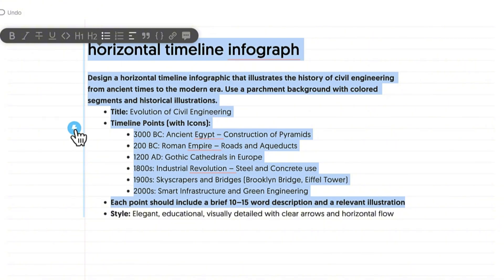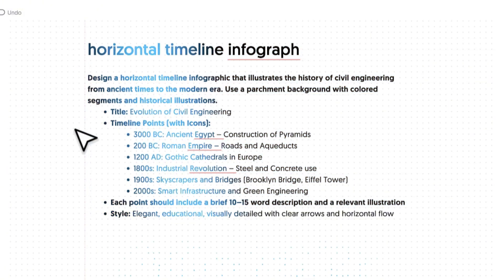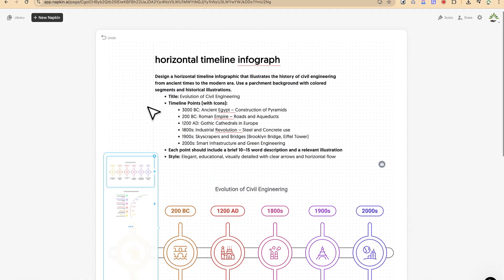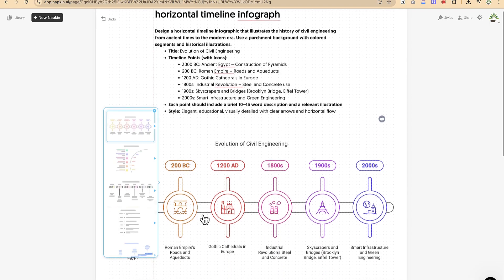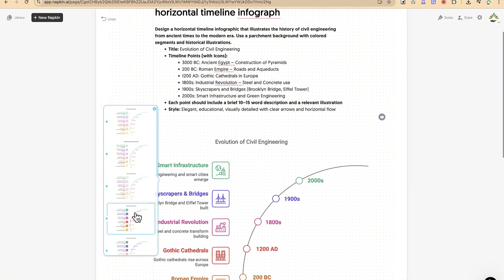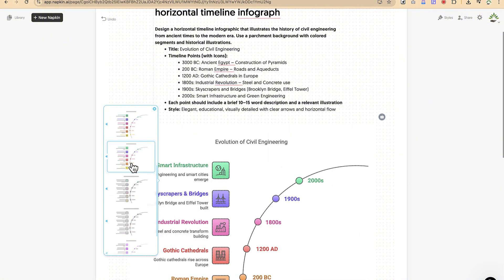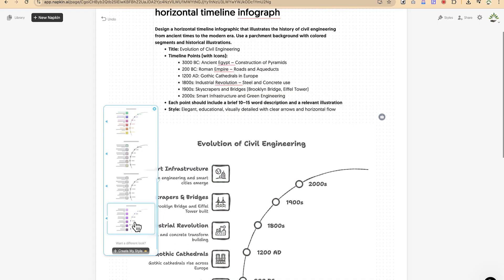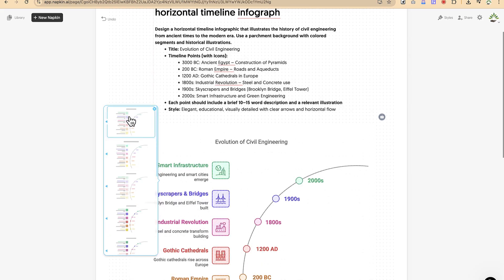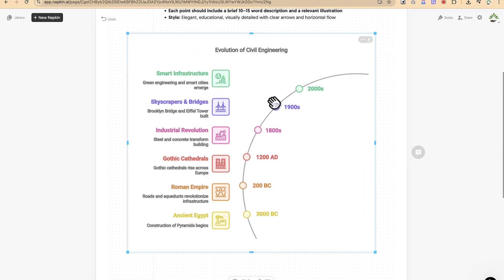Select everything and click 'Generate Visual.' Within seconds it will generate the visuals for you. You can see it has created a timeline showing the evolution of civil engineering over the years. You can try other variations — these are fantastic ones it has generated. You can change any of the elements, regenerate, use whichever you like, download it, and share it. That's the second way to use your own text.